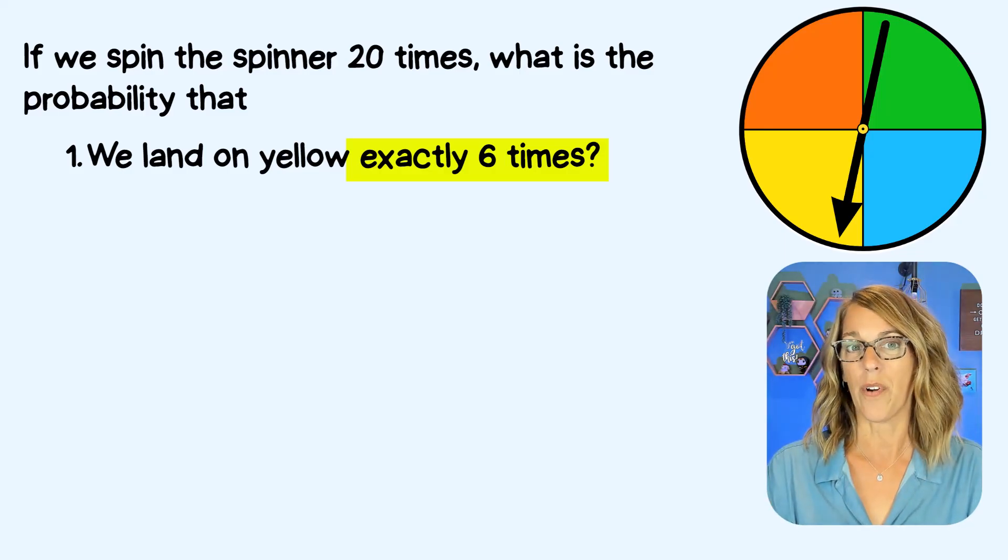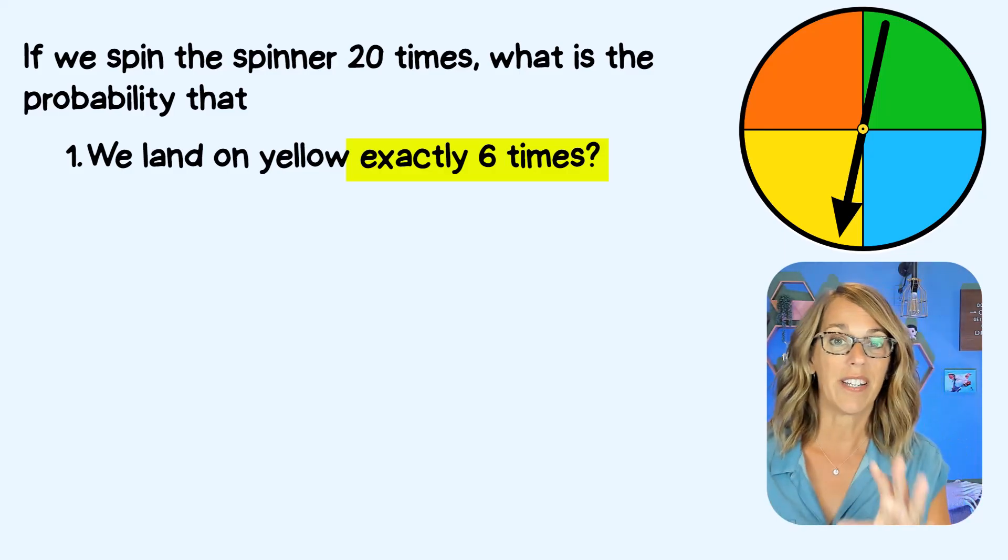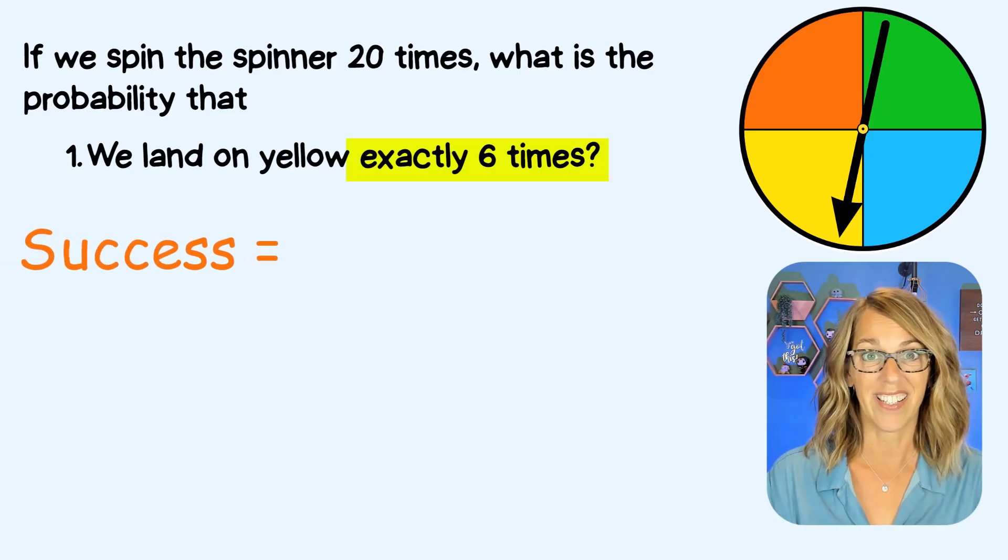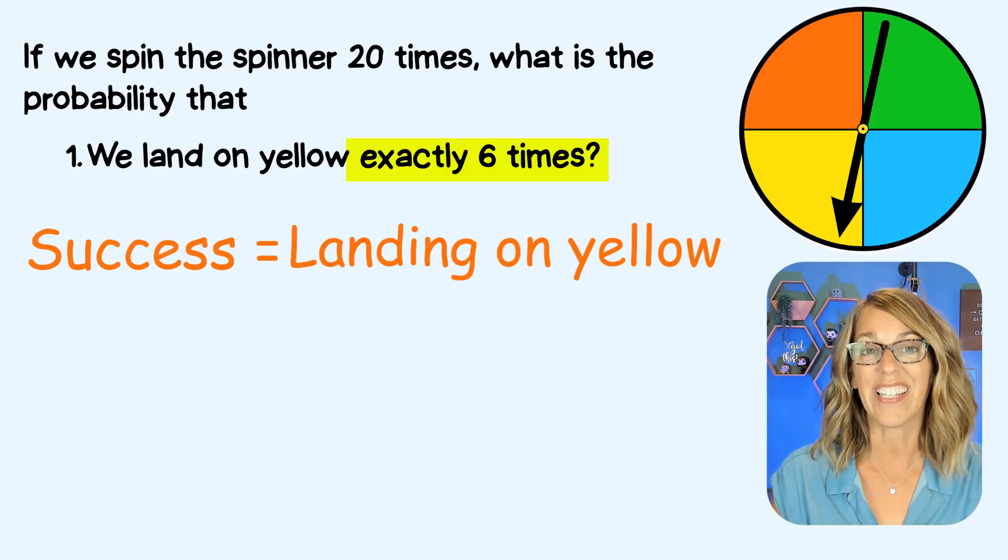Now there's some important information that we need for the calculator. First of all, we need to define what a success is. A success is going to be landing on yellow.